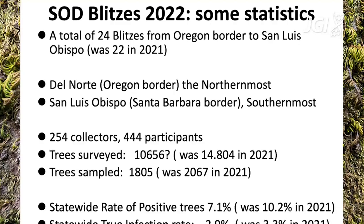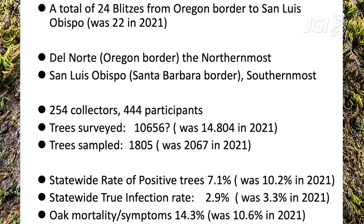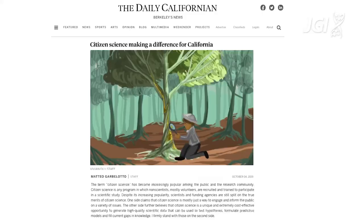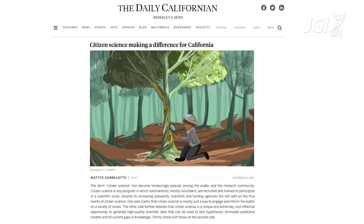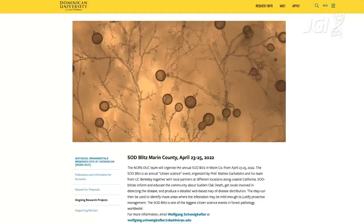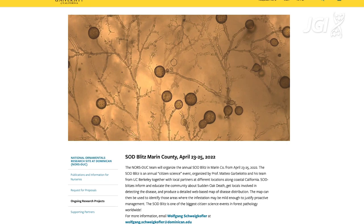This was the first example in the world of a large-scale citizen science project that contributed real data used in modeling and prediction of disease spread in a way never done before. We also like to call it community science because the project is not done at the individual level — people gather in local communities, do the search together, and once the results come in, they join forces to do the treatment. We have 30 such community science activities throughout the state.